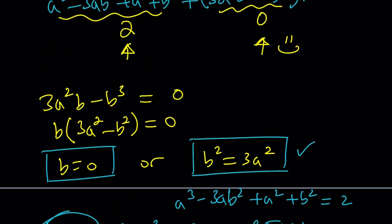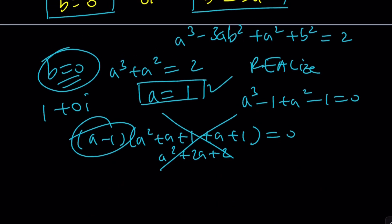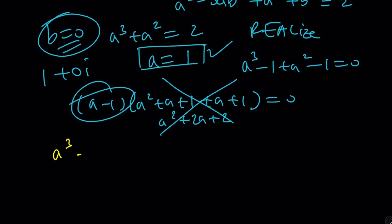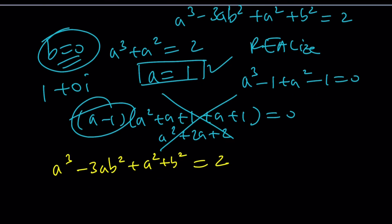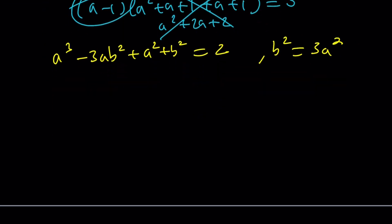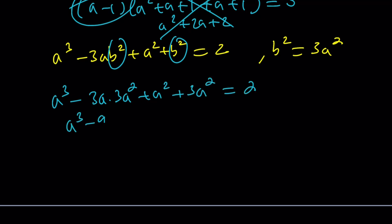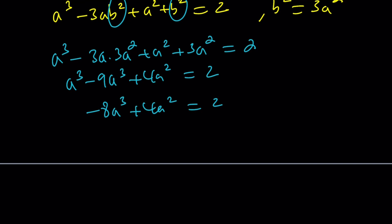We have B squared equals three A squared, along with the other one. Let's go to make another copy of that equation here, because we're going to use it. A cubed minus three A B squared plus A squared plus B squared equals two, along with B squared equals three A squared. It's the second case. If B squared is three A squared, we can go ahead and replace all the B squared values with that. And that's nice because we don't have a B. It's really cool. Three A times three A squared plus A squared plus three A squared equals two. Now this is going to give us A cubed minus nine A cubed plus four A squared equals two, and that's going to give us negative eight A cubed plus four A squared equals two.